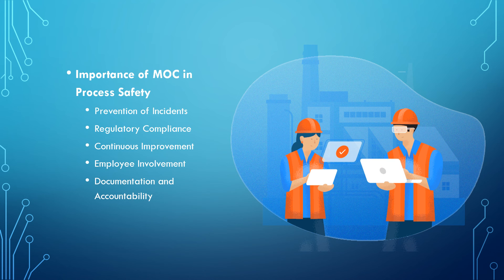Fifth, documentation and accountability: MOC requires thorough documentation at every stage. This documentation becomes a valuable resource for auditing, analysis, and future reference. In the ever-evolving landscape of industrial processes, the effective management of change is paramount to ensuring the safety and sustainability of operations. The management of change process stands as a sentinel, guarding against potential hazards and fostering a culture of continuous improvement. By systematically assessing and controlling the impacts of change, organizations can navigate the seas of transformation with confidence, safeguarding their personnel, the environment, and the integrity of their processes.